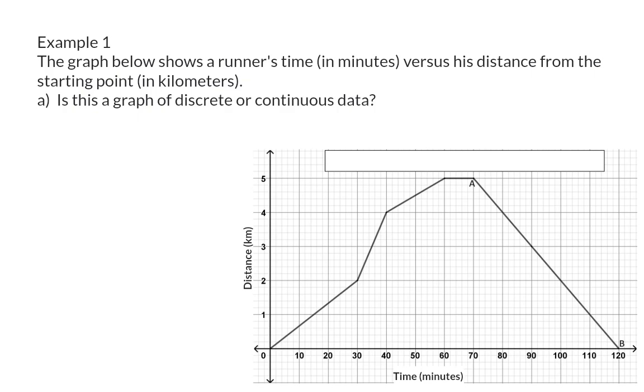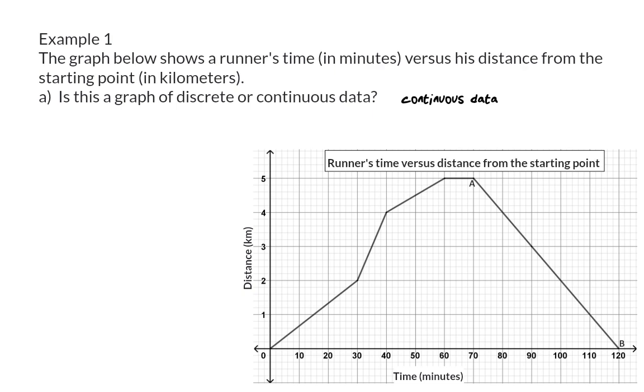Example 1. The graph below shows a runner's time in minutes versus his distance from the starting point in kilometers. Question A: Is this a graph of discrete or continuous data? This is definitely continuous data, because the distance is measured and the points on the graph are connected.